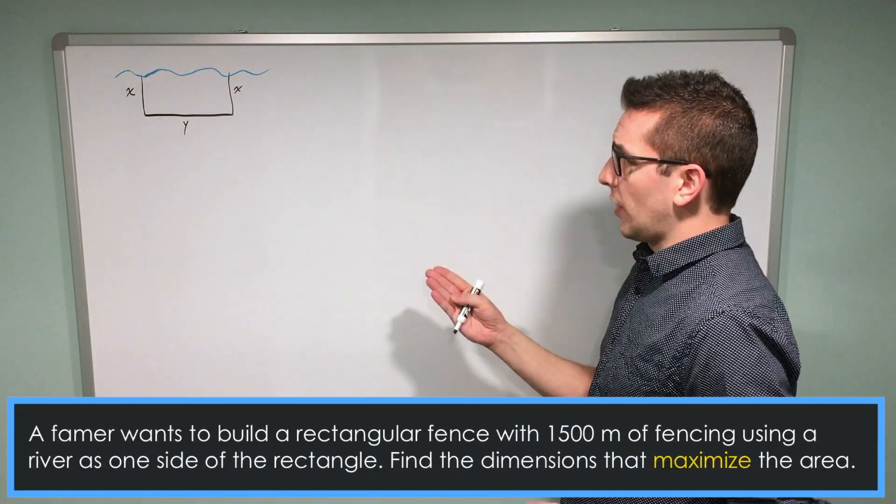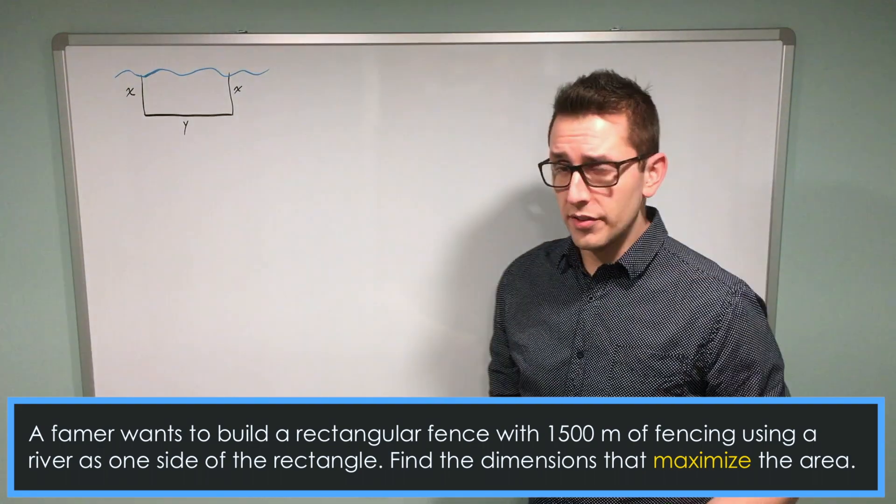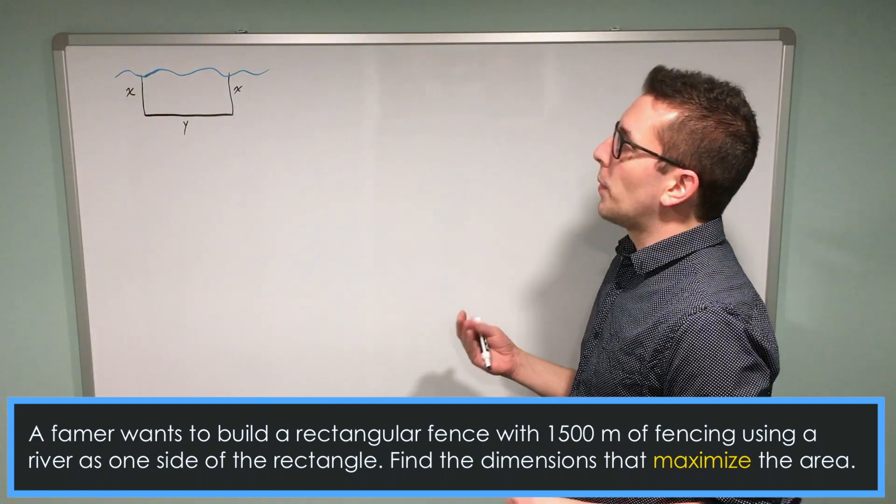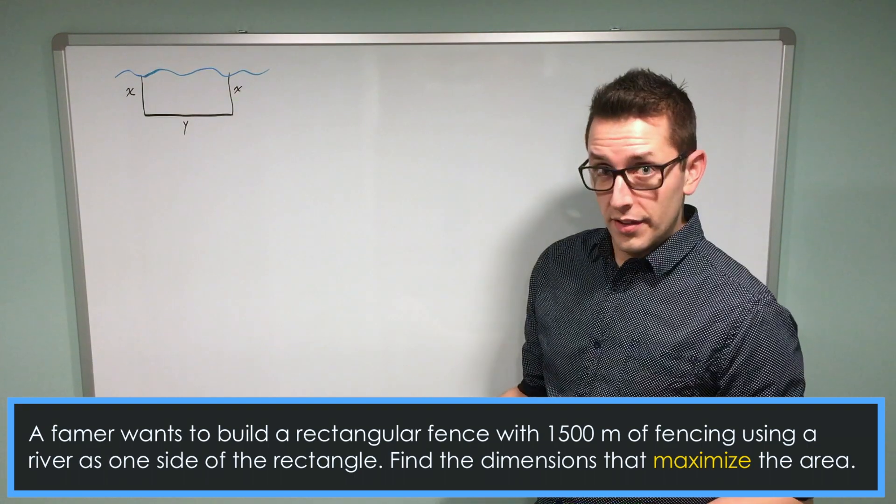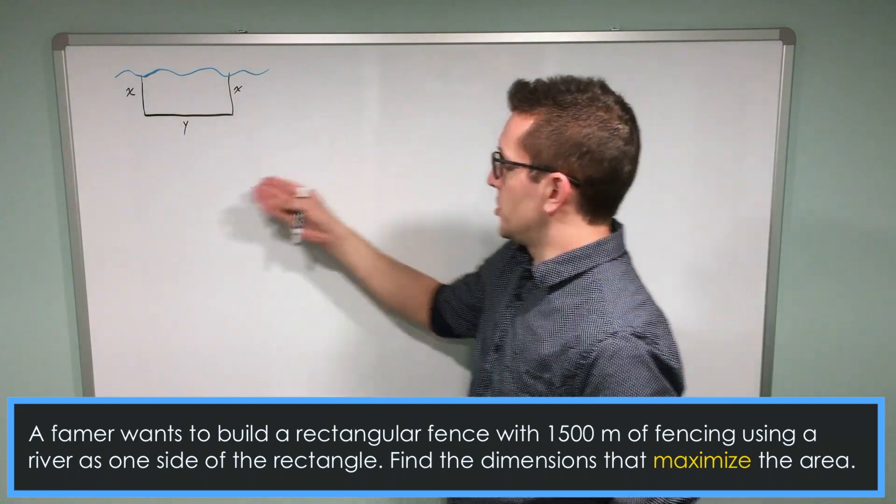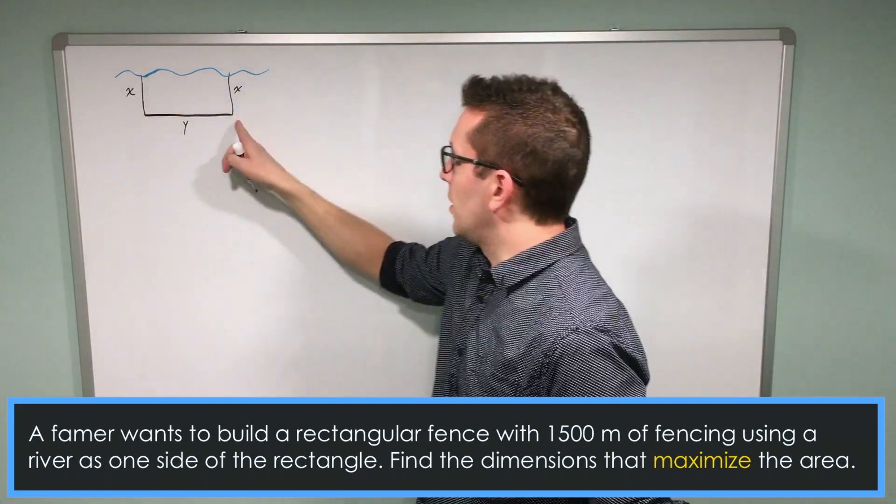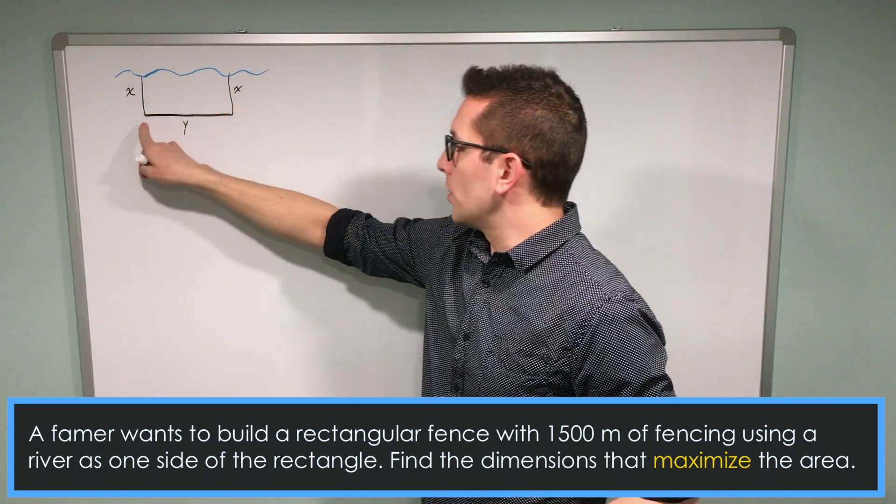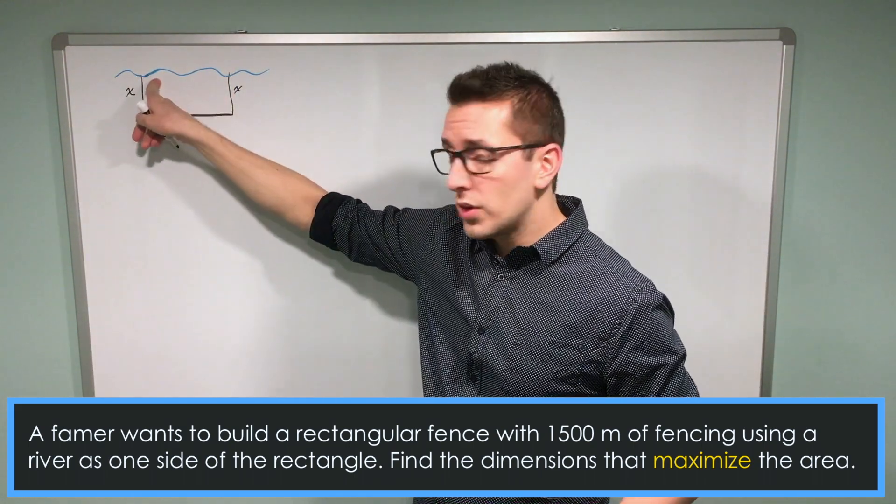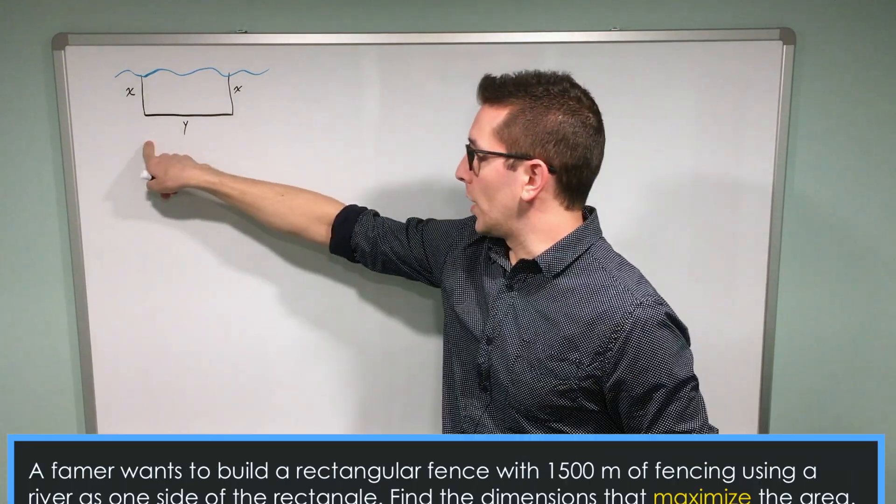In this particular example, I have a farmer who's got 1500 meters of fencing, and he's looking to make the biggest possible area with that fencing. In this situation, the farmer is going to build his pen next to a river. Because of that, one of the sides is taken up by that river, so we only need one length of the rectangle.